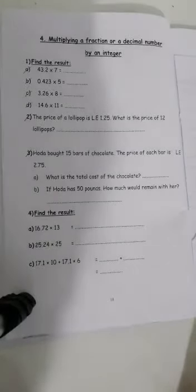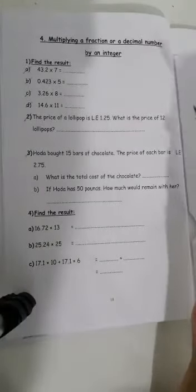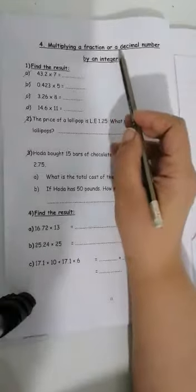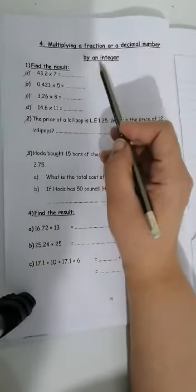Hi, Junior 5. This is page 18. Multiplying a fraction or a decimal number by an integer.